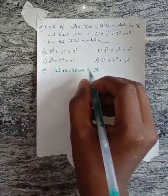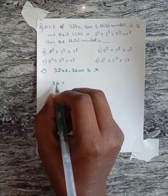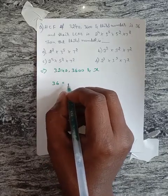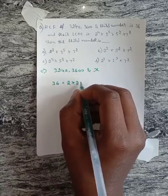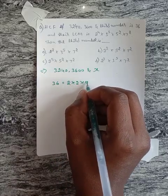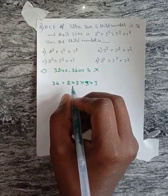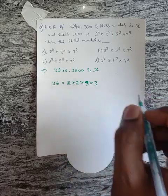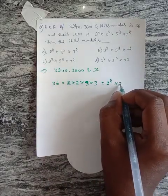36 means the factors of 36 are 2 into 18, then 18 is 2 into 9, which is 3 into 3. So the factors of 36 are 2 × 2 × 3 × 3. That is 2^2 and 3^2.